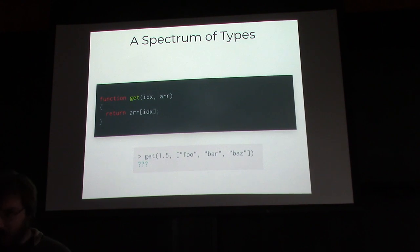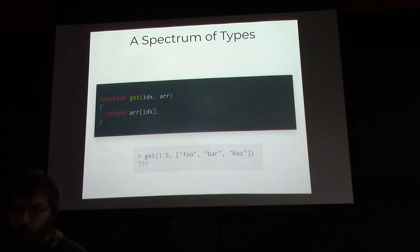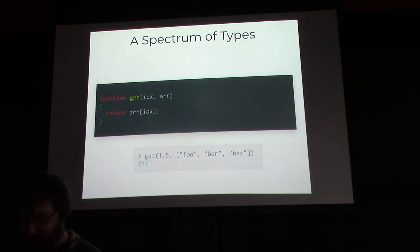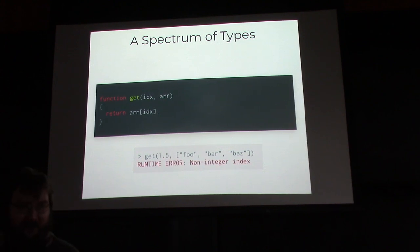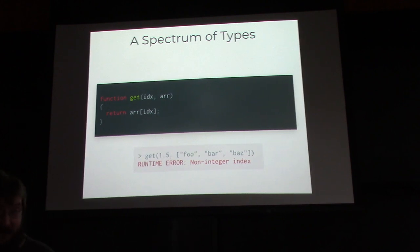Here's a riddle. If get one is 'bar' and get two is 'bas', what's get 1.5? Better question — what should get 1.5 be? In an untyped language, it'll be a runtime error.